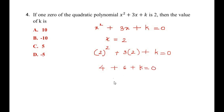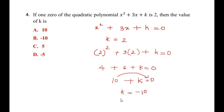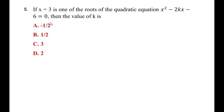We have 4 plus 6 equals 10, so 10 plus k equals 0, giving k equals negative 10 by moving 10 to the other side. The value of k is negative 10, so the answer is option B.